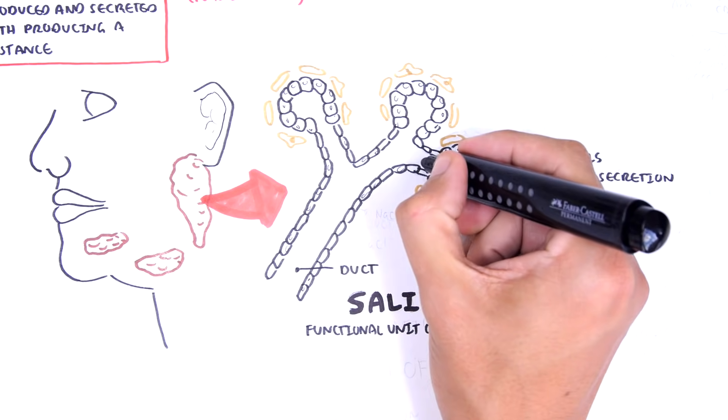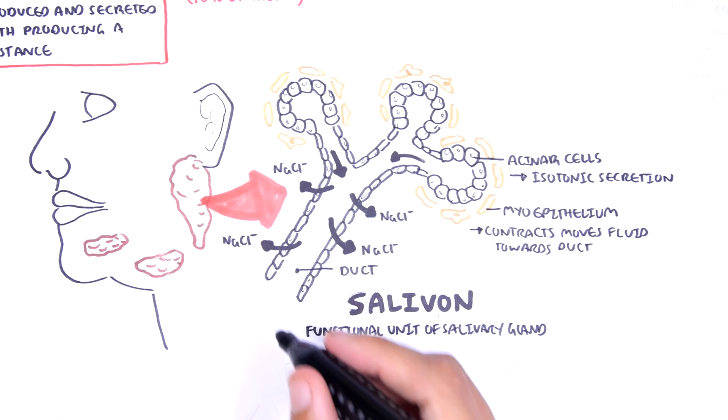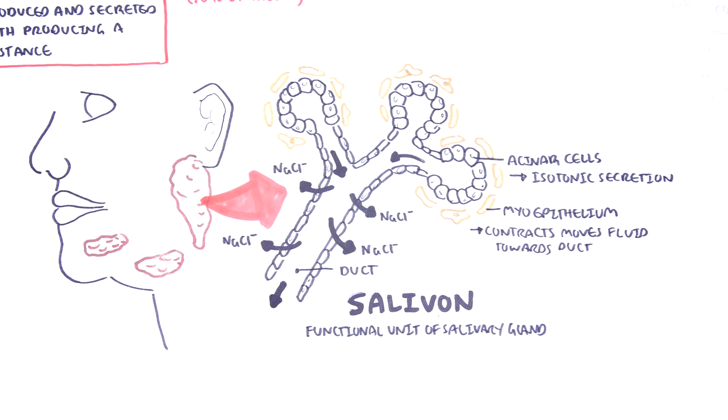Along the ducts, the fluid flows and these duct cells will reabsorb sodium chloride but will not reabsorb the water, making the saliva more hypotonic.